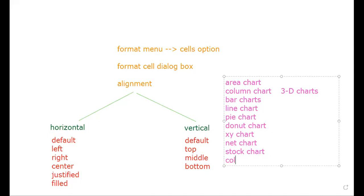The last chart is the column and line chart. It is a combination of both the column chart and the line chart together. Types of charts are clear.